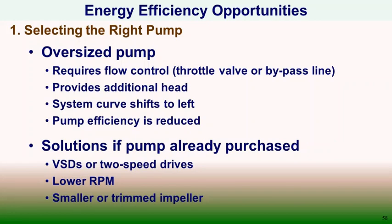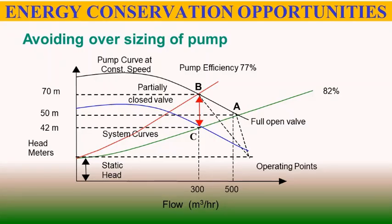Oversized pumps create inefficiencies. To overcome this, variable speed drives, two-speed drives, lower RPM, smaller impeller, or trimmed impeller can reduce system load — not by changing system resistance but by changing the pump performance curve, thereby reducing total flow capacity. For centrifugal pumps, the impeller peripheral velocity is directly related to shaft rotational speed, so varying RPM directly affects pump performance: flow rate is proportional to speed, head is proportional to speed squared, and power is proportional to speed cubed.